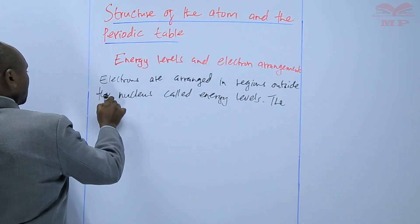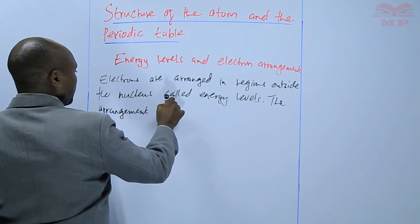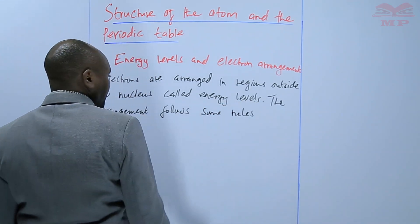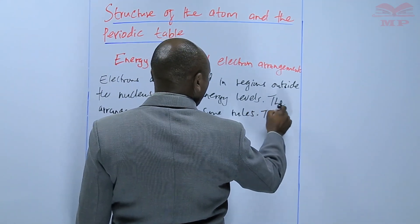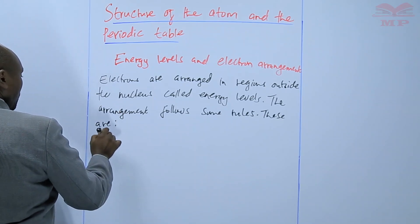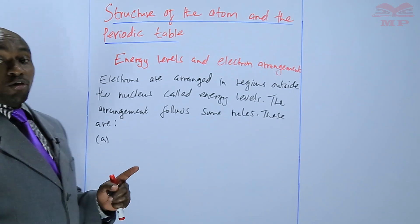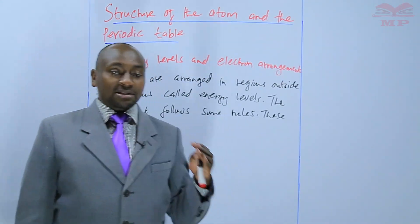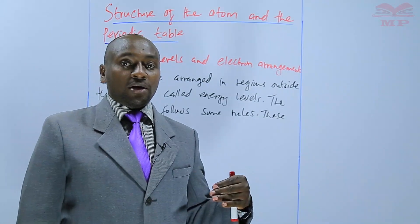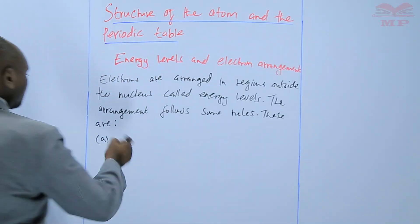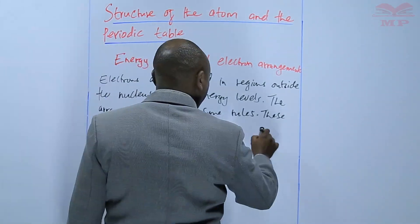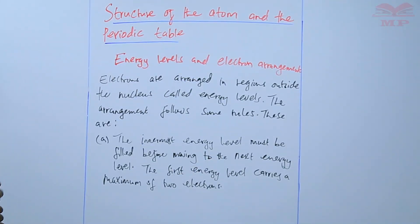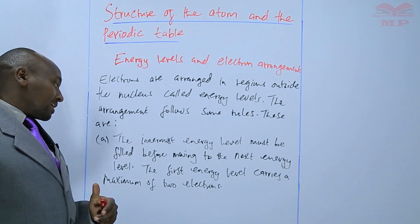The arrangement follows some rules. Rule one: an energy level must be fully occupied with electrons before electrons can be pushed to the next energy level. You must first fill the innermost energy level before you can move on to the second energy level.